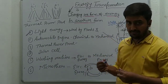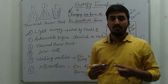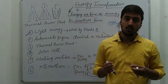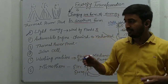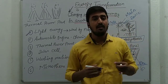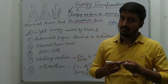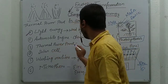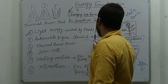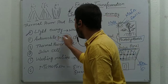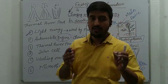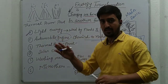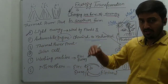The next example is automobile engines. Automobile engines run on petroleum — petrol or diesel. Petrol and diesel are fuels, meaning they are a form of chemical energy. By using these chemicals we run our engines, so here we are converting chemical energy into mechanical energy. This is another type of energy transformation.